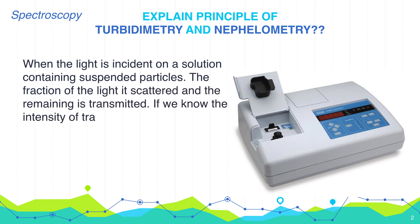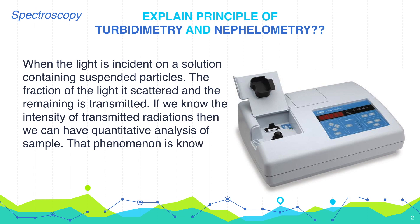If we know the intensity of transmitted radiation, then we can have quantitative analysis of samples. That phenomena is known as turbidimetry.